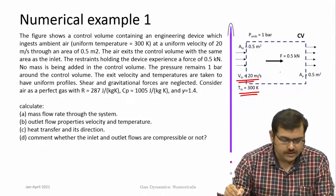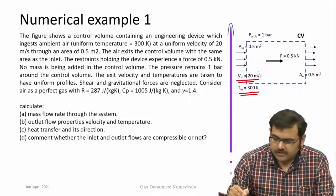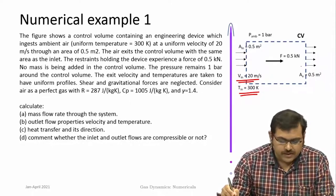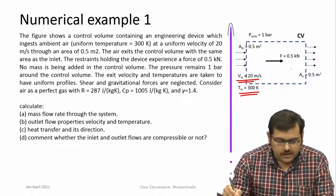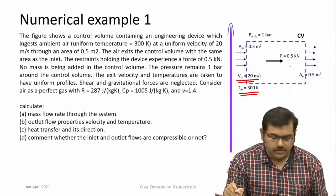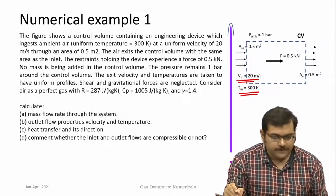First is calculate mass flow rate through the system, outlet flow properties—velocity and temperature, heat transfer and its direction, and comment whether the inlet and outlet flows are compressible or not.